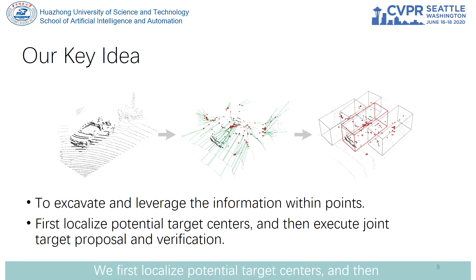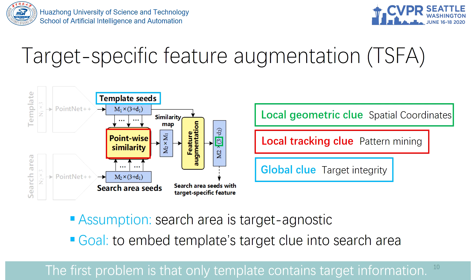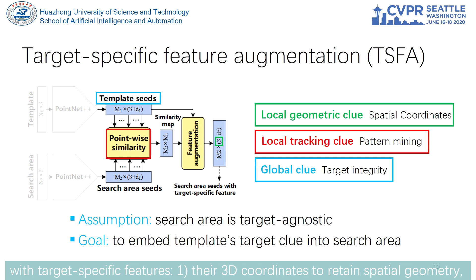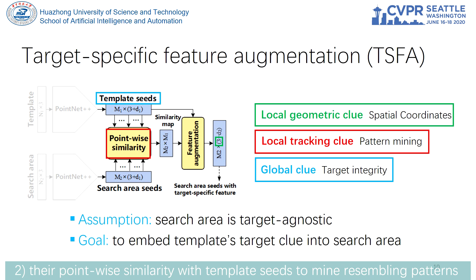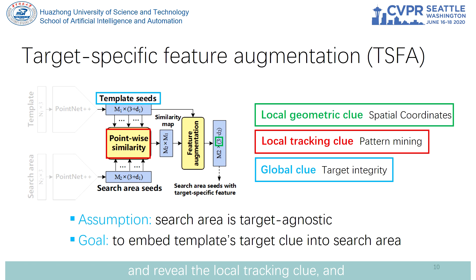Our key idea is to excavate the potential of points. We first localize potential target centers, then execute point-driven 3D target proposal and verification jointly. Since only the template contains target information, we leverage three main clues to augment the search area with target-specific features: first, their 3D coordinates to retain spatial geometry; second, their point-wise similarity with the template to mine resembling patterns and reveal local tracking clues.